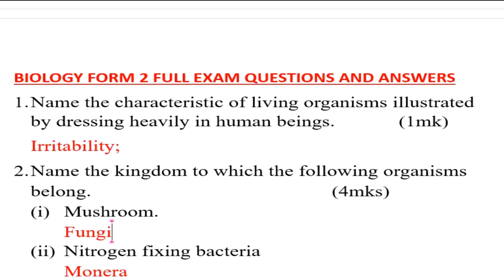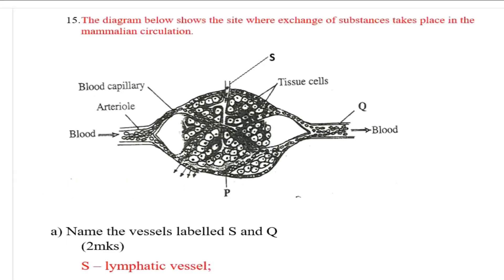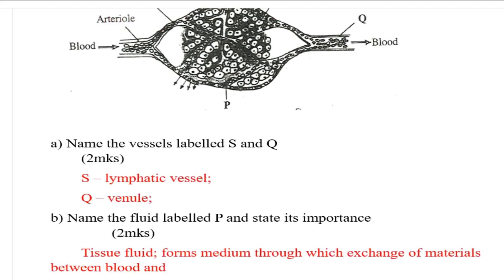Question 15: The diagram below shows the site where a change of substance takes place in the mammalian circulatory system. We have a blood capillary, an arteriole, blood, a point S, a tissue cell, part Q, and a point P. Name the vessels labeled S and Q. S is the lymphatic vessel and Q is the venule.